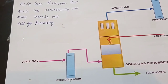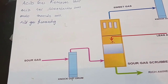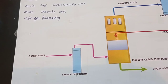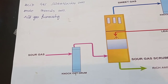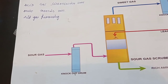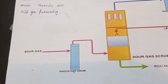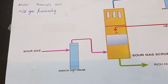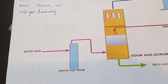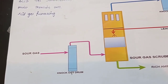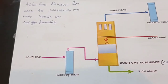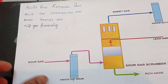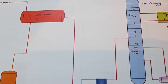Hydrocracking also uses hydrogen, similar to hydrotreating. Hydrocracking converts heavier gas oil into distillate — breaking the feed into simpler forms. This is called hydrocracking, and it is worth understanding alongside hydrotreating.